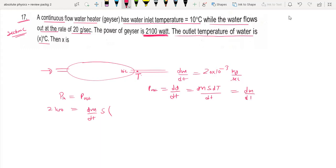So ΔT, we can write as T minus 10. This is equal to 20 into 10 to the power minus 3. S is given as 4200 joule. T minus 10.